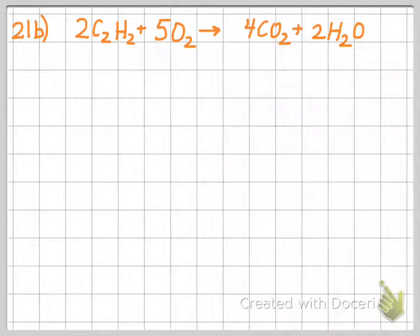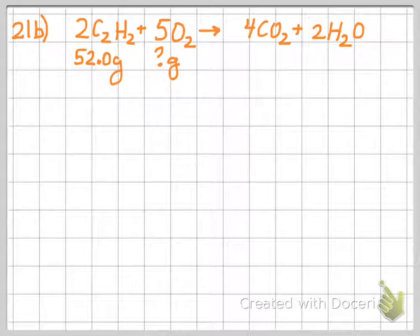21B says how many grams of oxygen are required to burn the 52 grams of acetylene. This one is saying start with our 52 grams of acetylene and figure out how many grams of oxygen we need. Very similar problem to what we've been doing. So we're still going to start with our 52 grams of acetylene.